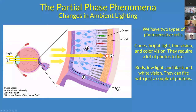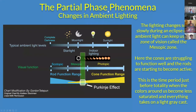Then we have the rod cells, which are for nighttime vision. They absorb at one wavelength, so they're black and white, and there are a lot more of those, but they can fire with just a couple of photons — so they're much more sensitive. An interesting thing happens during an eclipse because it's happening so slowly and we have such a long time to dark adapt.